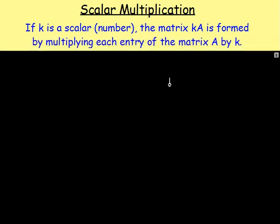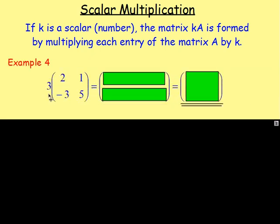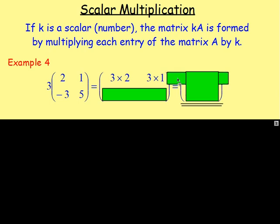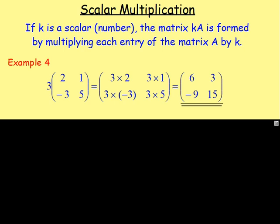Scalar multiplication. If k is a scalar — in other words, just a number — the matrix kA is formed by multiplying each entry of matrix A by k. So for example 4, if we have this matrix with 2, 1, negative 3, 5 and we've got a 3 in front of it, we're multiplying each entry by 3. So we'd have 3 times 2, 3 times 1, 3 times negative 3, and 3 times 5. That gives us 6 and 3 for the top row and negative 9, 15 for the second row.